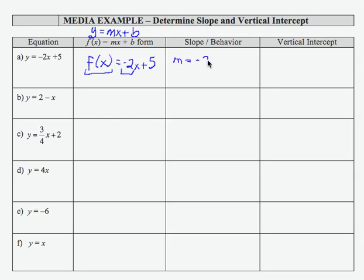Because the slope is negative, we say our function is decreasing. That's the behavior of our function. Our vertical intercept is in the b slot, and we write that as an ordered pair.